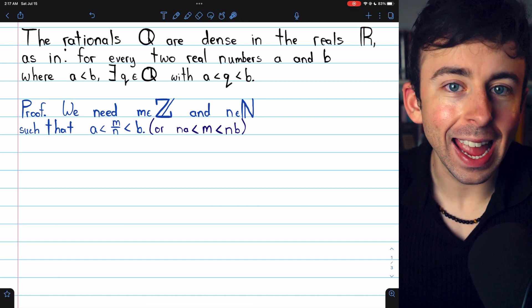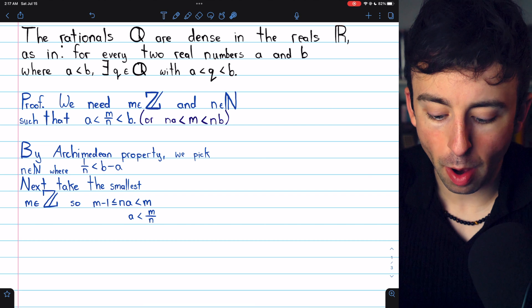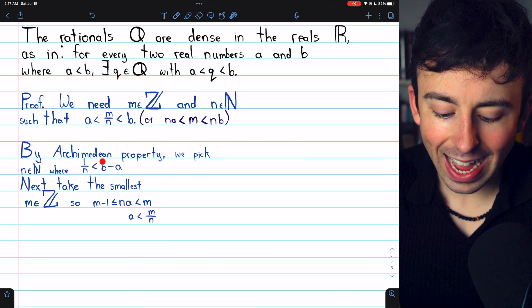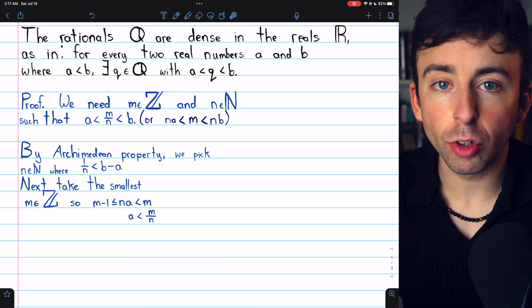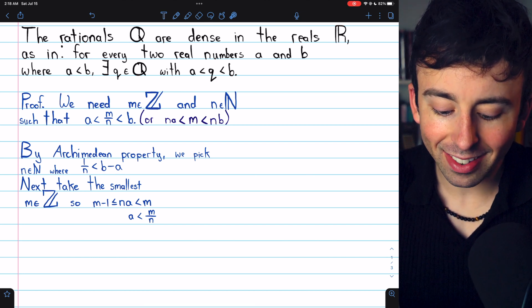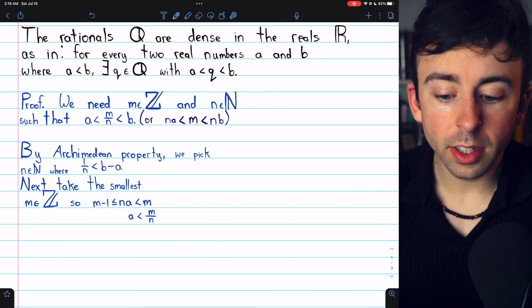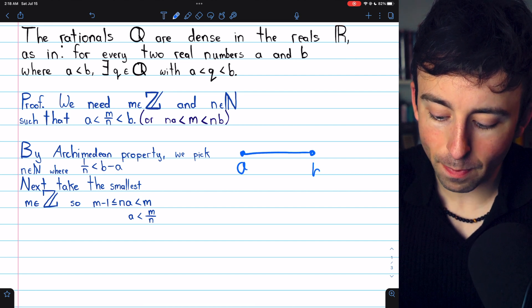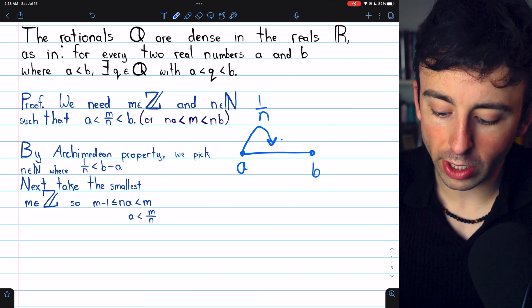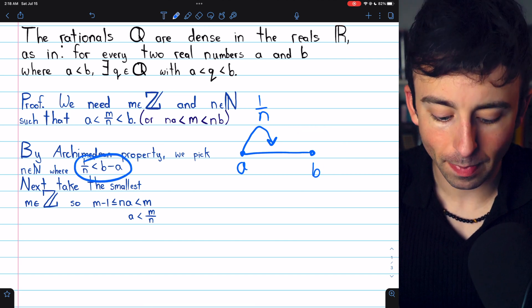We'll begin the proof by applying the Archimedean property. By the Archimedean property, we know we can pick a natural number N so that 1 over N is less than B minus A. Certainly, we can find some natural number such that 1 over that number is less than the distance between B and A. So that's what we're doing here. N is our denominator. This means, of course, that if we started at A, which is less than B, we could jump forward 1 over N and be assured that we're not going to jump past B because 1 over N is less than the distance between B and A.